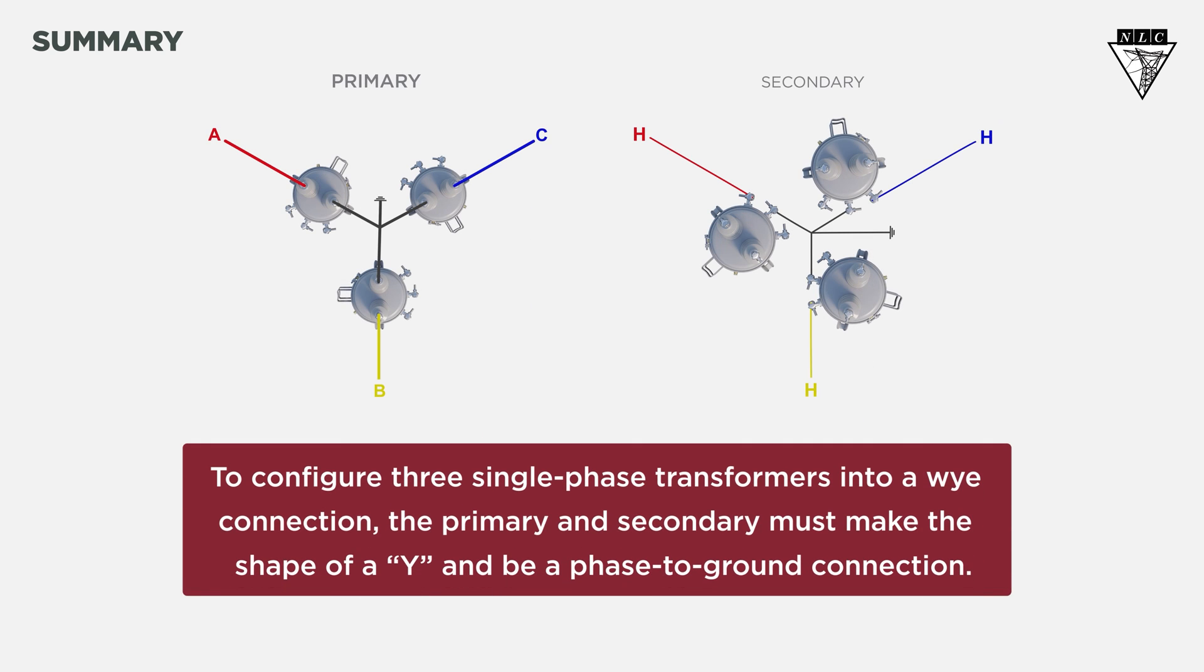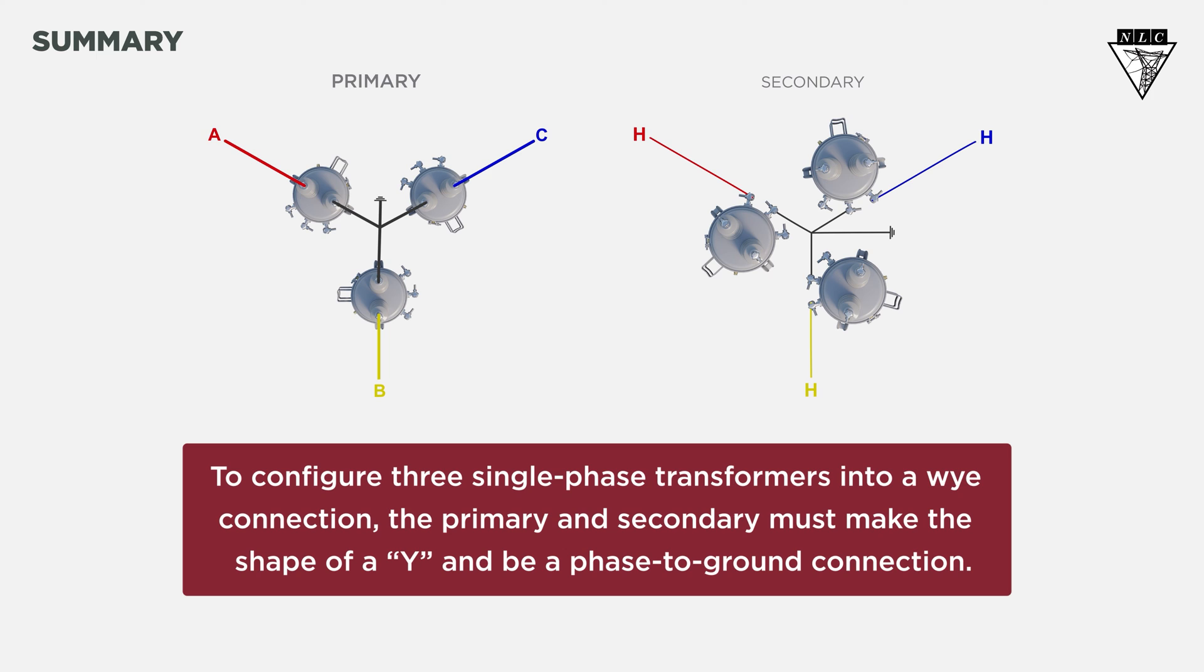So, what did we learn? To configure three single-phase transformers into a Y connection, the primary and secondary must make the shape of a Y and be a phase-to-ground connection.